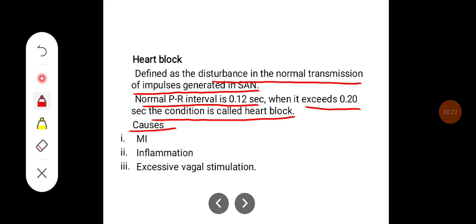Some of the causes for heart block are myocardial infarction, inflammation of the myocardium or the conducting system, and excessive vagal stimulation.